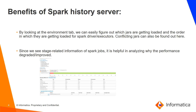Here are the benefits of the Spark History Server. By looking at the environment tab of a particular job in the Spark History Server UI, we can find out which jars were loaded for the job and in which order they were loaded. If there are any conflicting jars, we can find them out. We also have information on the executors, like how many executors were created and how much time each executor took to complete. This information is very useful if a user wants to improve performance or investigate why a job was performing slowly.